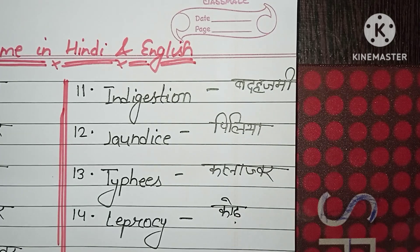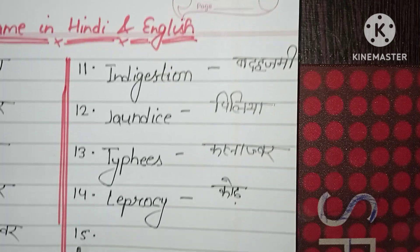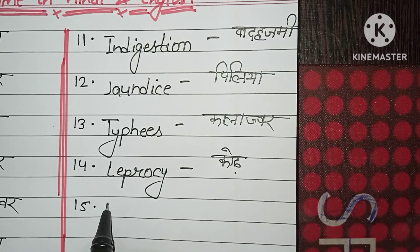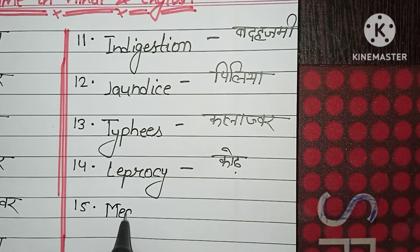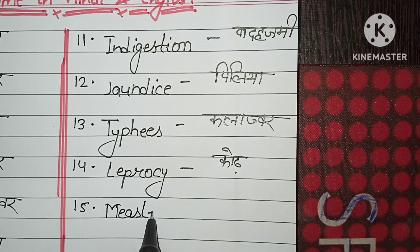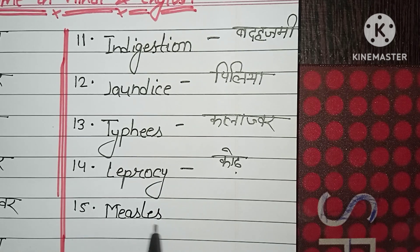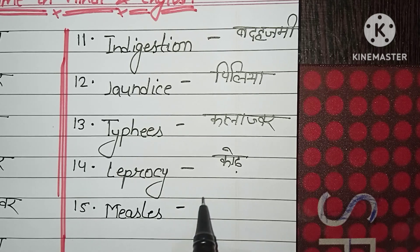Number fifteen: measles. M-E-A-S-L-E-S. Measles. Khasra.